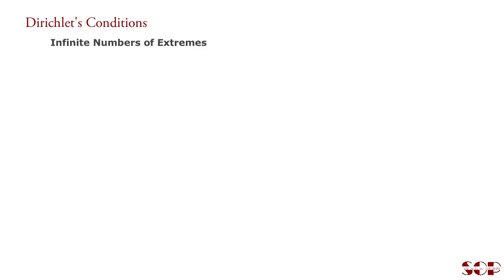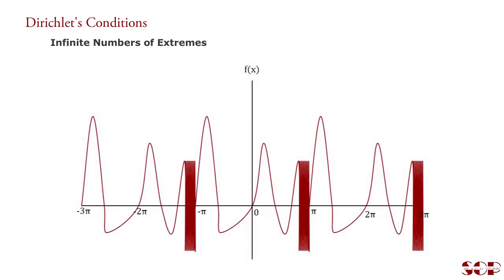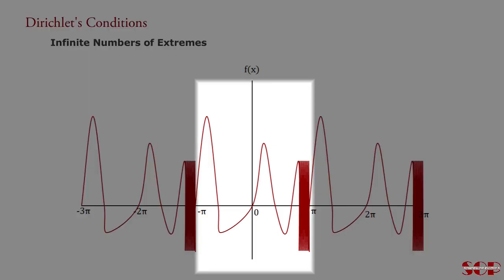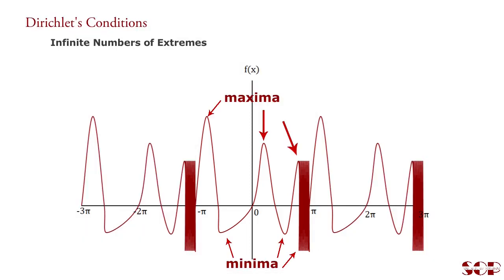Infinite number of extremes. Consider one more periodic function. In interval -π to π, the function has an infinite number of maxima and minima. Actually, to resolve the picture clearly, we draw less number of extremes. But if it is infinite in number, then we call the function has an infinite number of extremes.